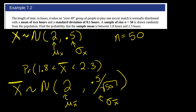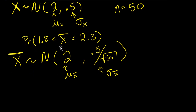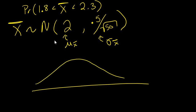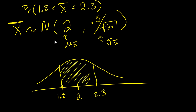Once I have the distribution of x̄, I can calculate this probability similarly to how I would calculate a probability for x. I'll start by drawing out the distribution of x̄. In the center I have mu equals 2. Then 1.8 is to the left of 2 and 2.3 is to the right, and I need to find the area between 1.8 and 2.3.